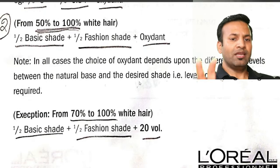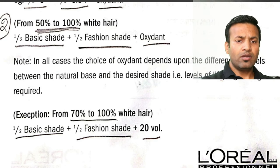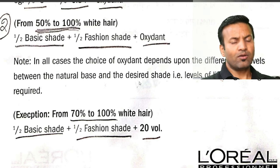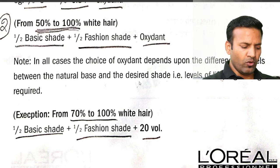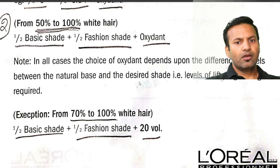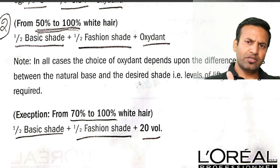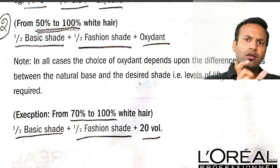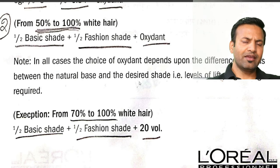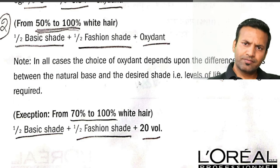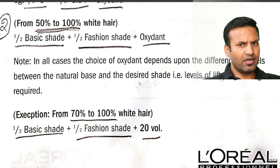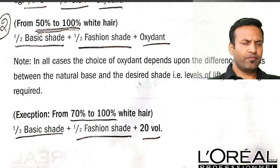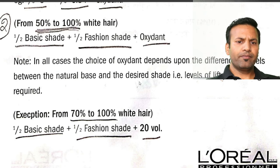इसके बाद आता है third number: 50 to 100% gray coverage में, मैं recommend करूँगा कि आप सीधा base color लगाओ, ज्यादा better है। लेकिन फिर भी अगर आपके client को fashion shade चाहिए, तो आधा fashion shade का tube जाएगा, आधा base shade का tube जाएगा। मालो 30 ml base डाला, 30 ml fashion डाला, हो गया 60 ml। Developer भी उसी ratio से: अगर L'Oreal का ratio है तो 1 is to 1.5, अगर Wella का ratio है तो 1 is to 1 — उस हिसाब से developer डालेंगे। Note: in all cases, the choice of oxidant is dependent upon the difference in levels between the natural base and desired shade — level of lift, lightening required।